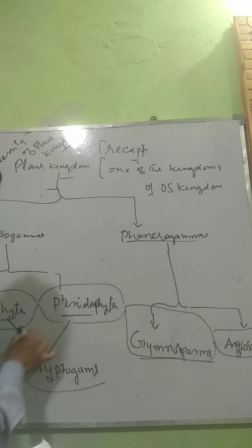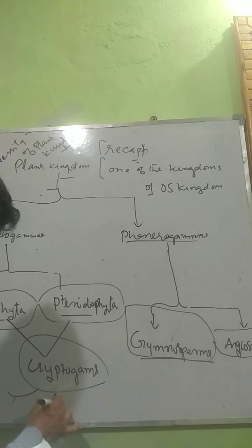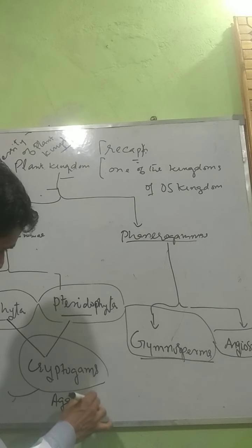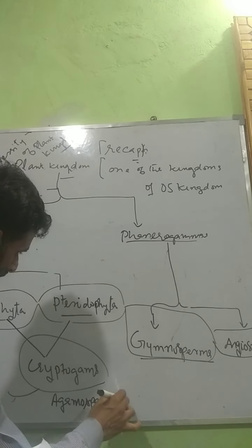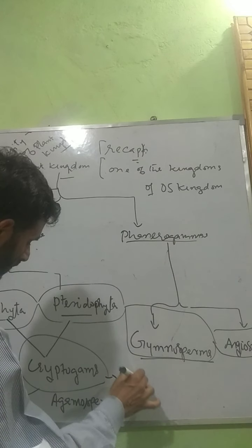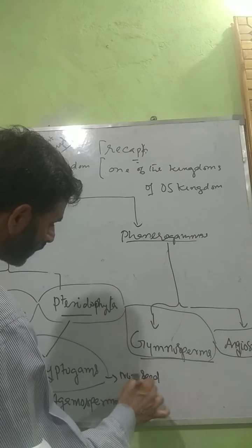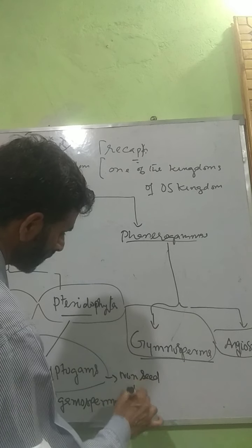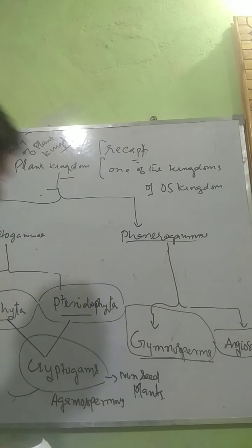Cryptogamous are also called agamosperms — agamosperms means non-seeded plants. They do not produce seeds.